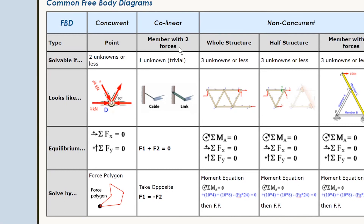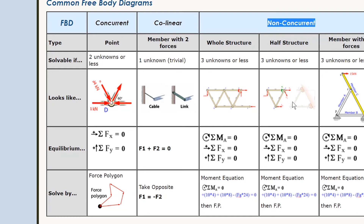With non-concurrent, we often come to the problem initially needing to find reaction forces. In that case we take the body as the whole structure — every member as one piece. We do our standard non-concurrent equilibrium equations: moments, forces in x, and forces in y. We solve them by taking a moment equation at a well-selected point, typically one with too many unknowns, which eliminates those unknowns. The whole structure is the body, or in method of sections we take part of the structure.